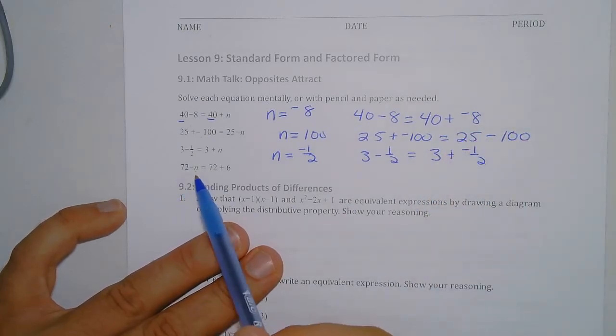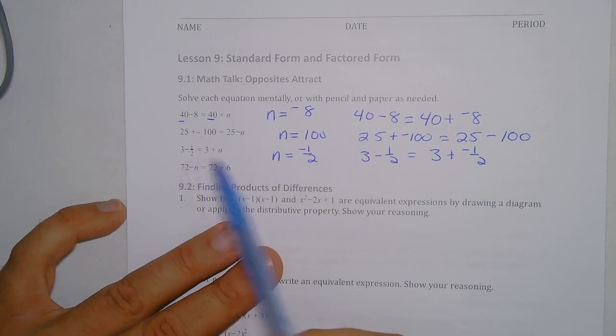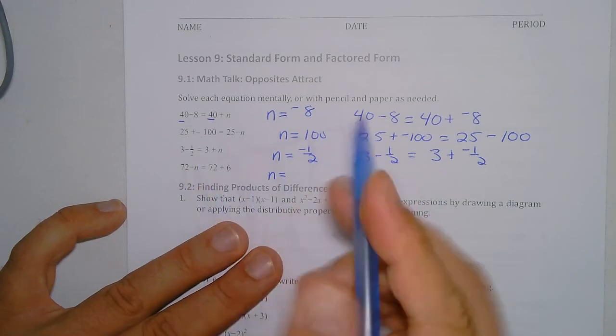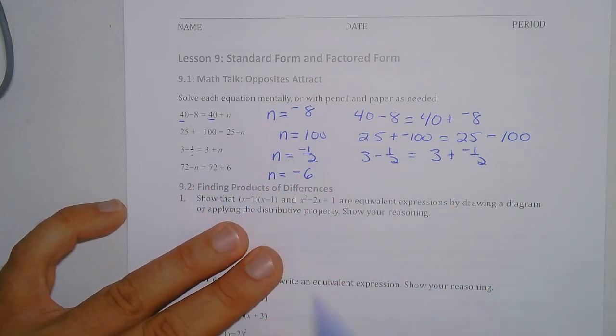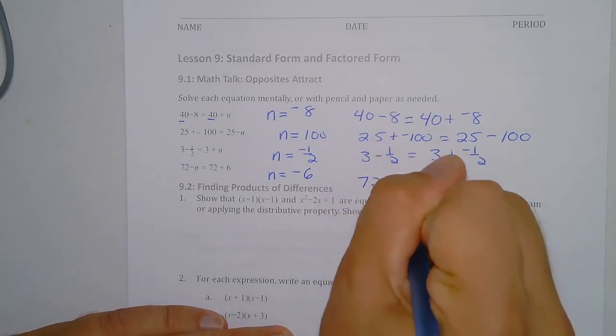And then here, 72 - blank is the same as 72 + 6. Well, the only way to add when you're subtracting would be if I subtracted a negative. So we could think of this as n is going to be -6. So if I subtract -6, that's the same as adding 6. This means 72 - (-6) is the same as 72 + 6.